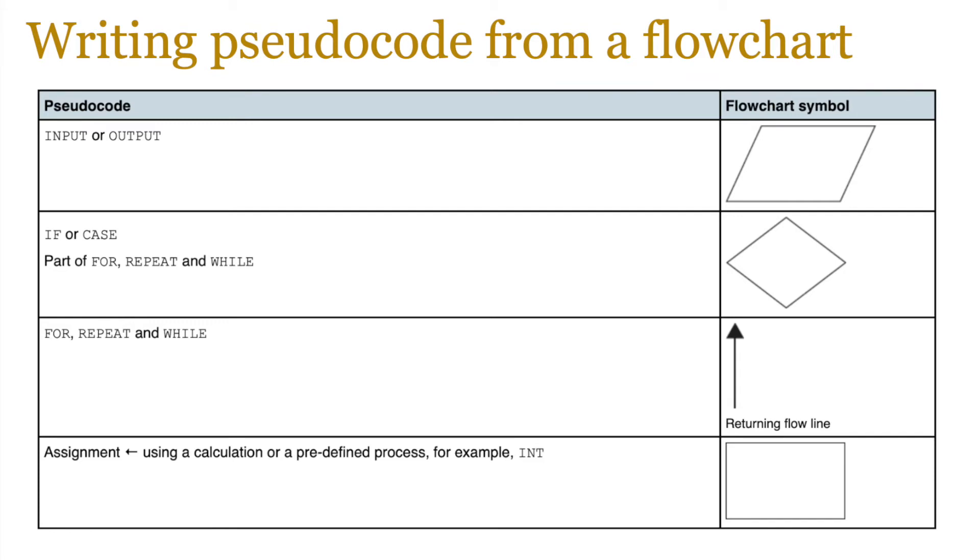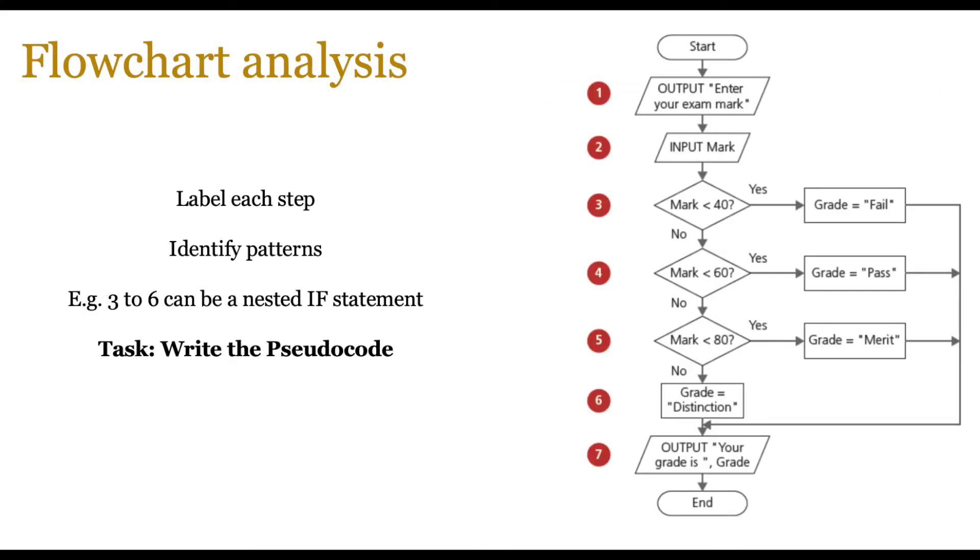So once you know the equivalent pseudocode to flowchart symbols, if in an example you're given a flowchart, you can easily decipher the right pseudocode lines based on the symbols. Now let's analyze a typical flowchart. How do we break that down into pseudocode? So on screen you see an example of a flowchart.